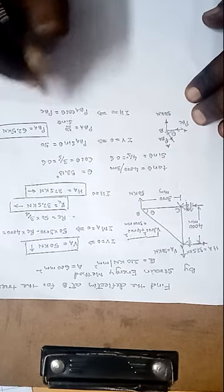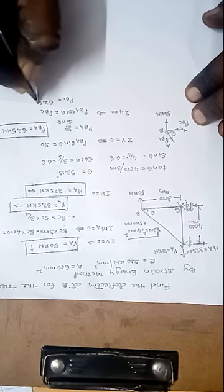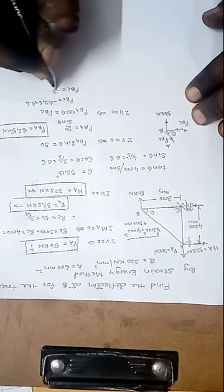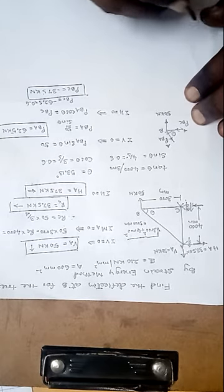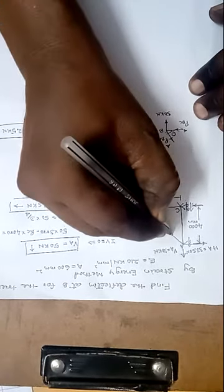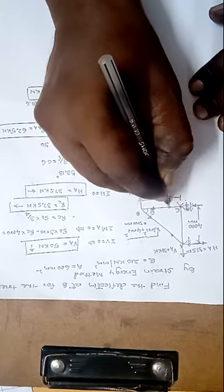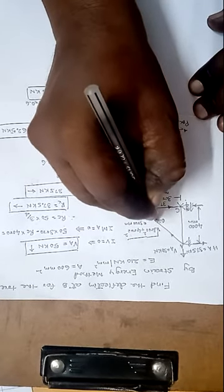From summation of horizontal forces equals zero at joint B: P_BA × cos θ = P_BC. So P_BC = 62.5 × 0.6 = 37.5 kilonewton. Since this comes out compressive, P_BC = −37.5 kilonewton. To summarize, member BA is 62.5 kilonewton tensile and member BC is 37.5 kilonewton compressive.